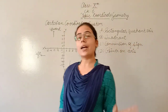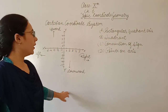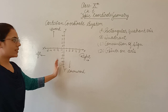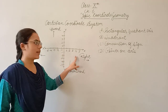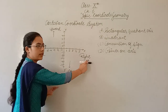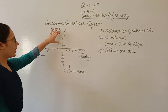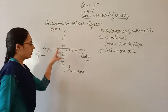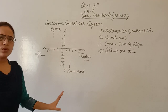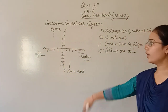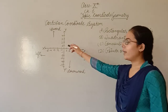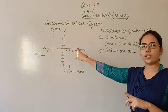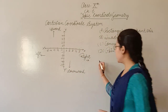First, let's start with the Cartesian plane. What is this system? This is the Y-axis — the vertical axis — and this is the horizontal axis, the X-axis. The right side is positive and the left side is negative. In the upward direction, Y-axis coordinates are positive, and in the downward direction, Y-axis coordinates are negative.